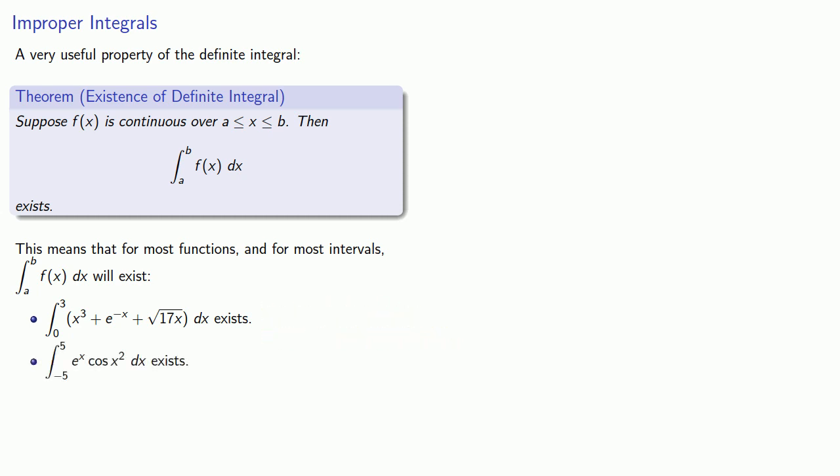Now sometimes we might not be able to find an antiderivative, for example this function, but because it's continuous over the interval, we know that the definite integral exists and we can try to find it using some other method.